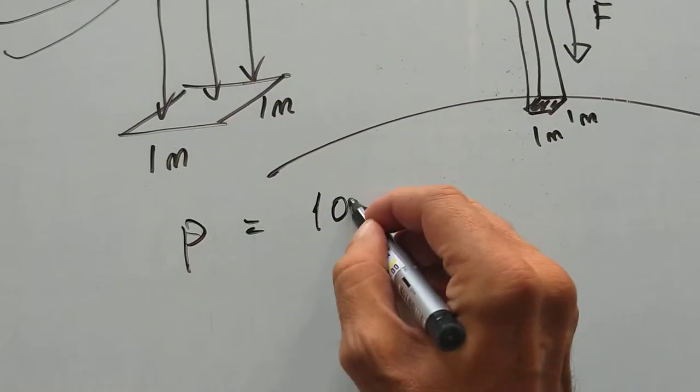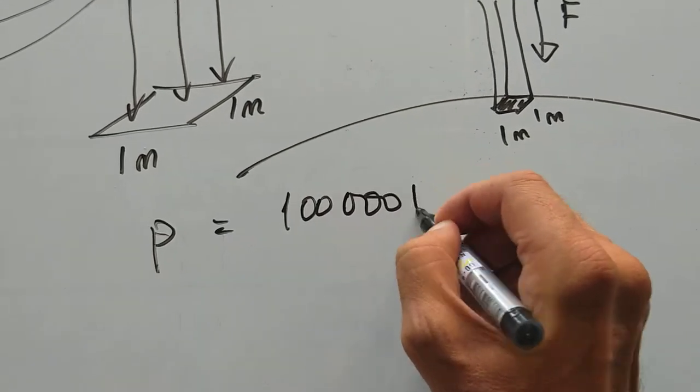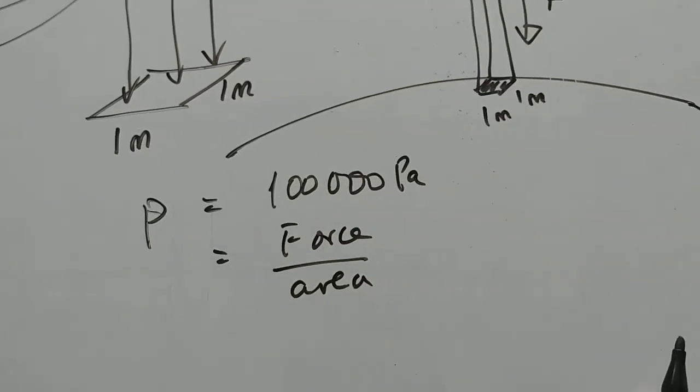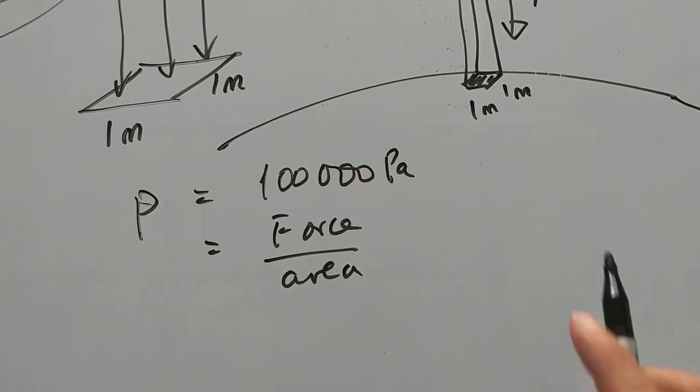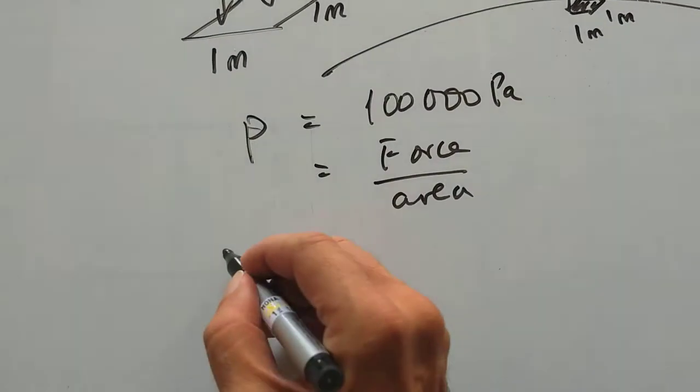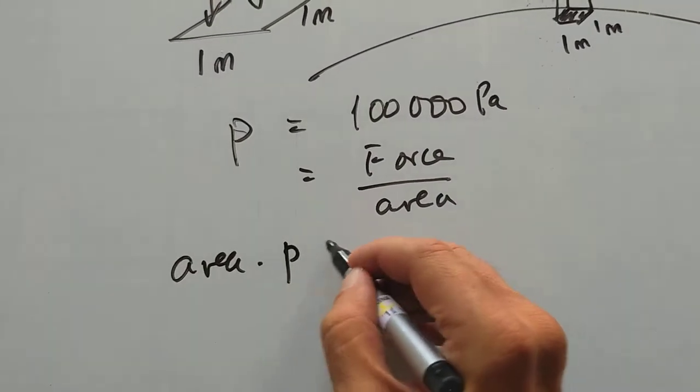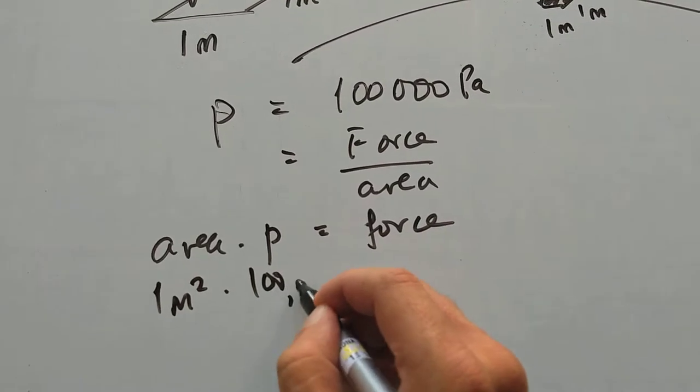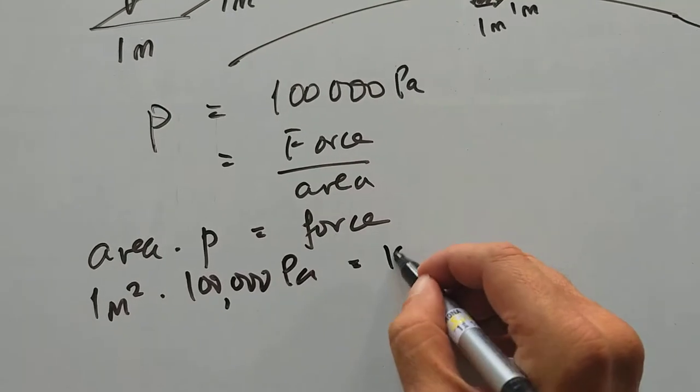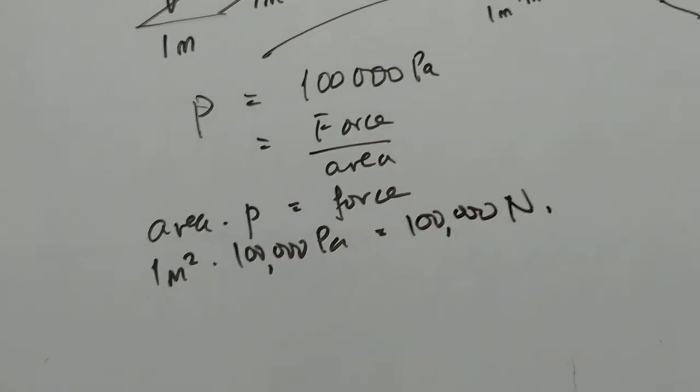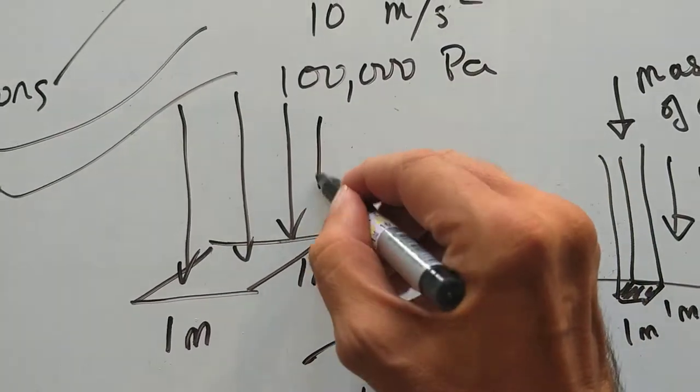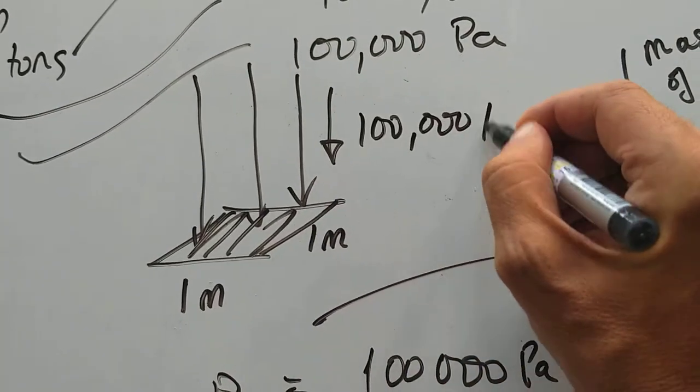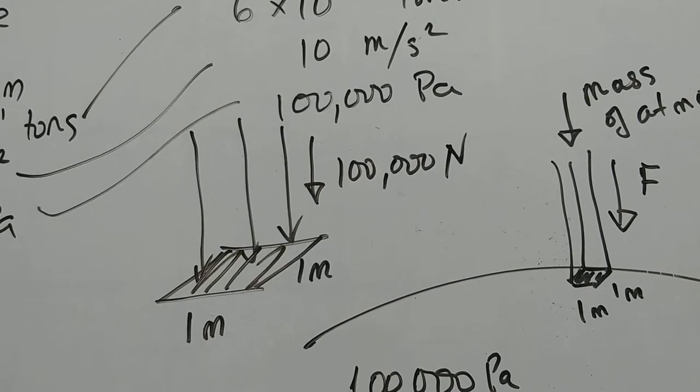It's not hard to calculate this. There's a force pushing down on this one square meter. What is that force? Well, the pressure is 100,000 Pascals, and that's the force per area on the Earth. So if my area is one square meter, area times pressure is force. We have one meter squared times 100,000 Pascals. That's a force of 100,000 Newtons pushing down on one square meter of your floor.